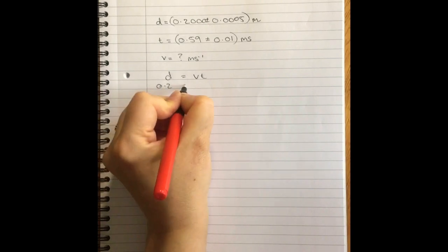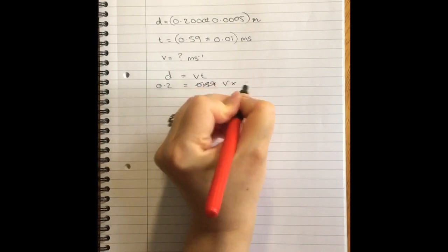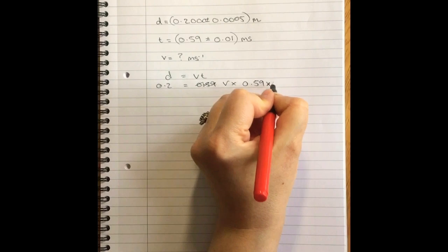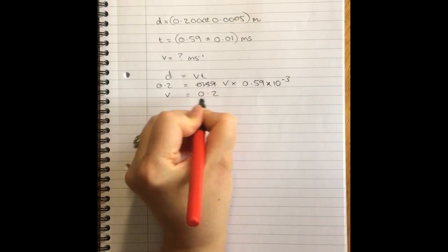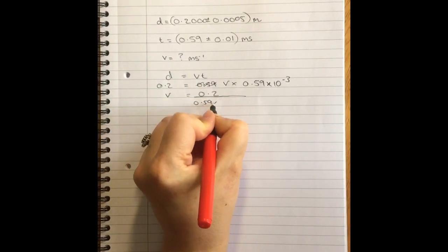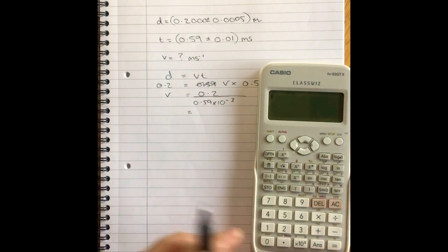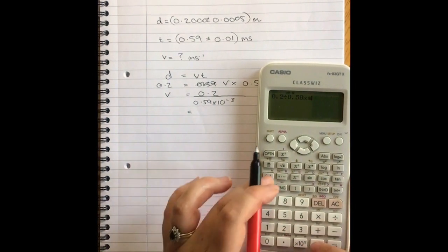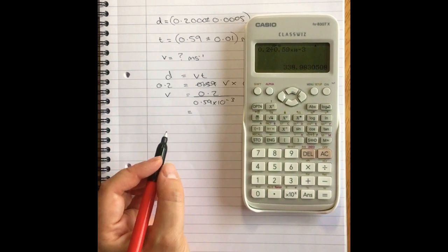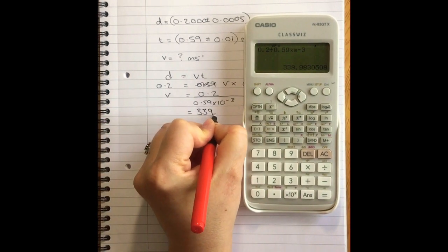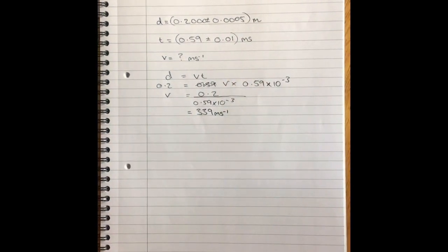So D equals VT. That's 0.2 is equal to V times 0.59 times 10 to the minus 3, because that is a millisecond. V equals 0.2 over 0.59 times 10 to the minus 3. Now, I know I should be writing 2, 0, 0, 0, but we all know it makes no difference to the answer. So it's fine. And there is our speed. So indeed, it comes out as 339 meters per second. There we go. Pretty close to our standard higher speed of 340 meters per second.